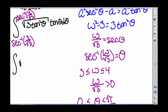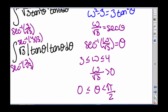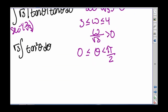We can separate out the square root, giving us square root of 3 times the absolute value of tangent of theta times tangent of theta d theta. Since theta is between 0 and pi over 2, tangent of theta is always greater than or equal to 0 — you can verify this on the unit circle. So the absolute value of tangent theta times tangent theta is just tangent squared theta. We have square root of 3 times the integral of tangent squared theta d theta, with bounds from inverse secant of 3 over square root of 3 to inverse secant of 4 over square root of 3.